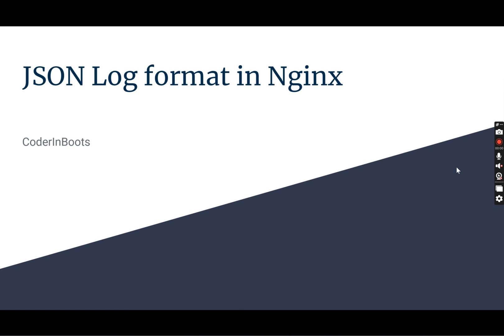Hello everyone, welcome back to Quarter in Boots. Today we are going to discuss another topic on NGINX, which is about formatting the structure of NGINX logs. By default, NGINX has a logging mechanism and it logs the access and error logs in a default folder — on Linux machines it's mostly in /var/log/nginx. This is a configurable location and the default delimiter is a whitespace-based delimited file. It is completely customizable, so depending on what fields we need to display, we can customize the logs.